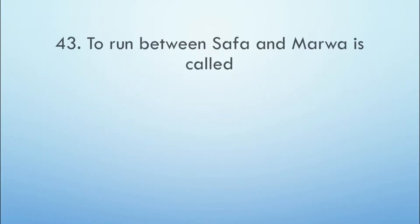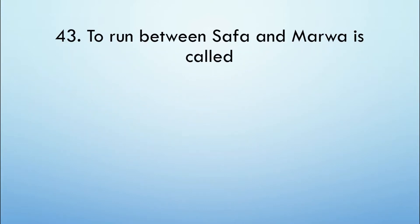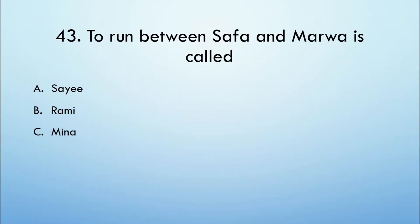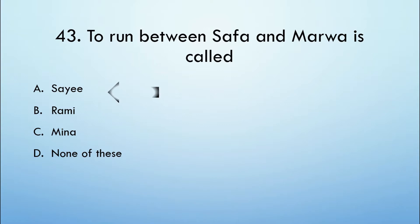To run between Safa and Marwa is called: Option A: Sa'ee. Option B: Rami. Option C: Mina. Option D: None of these. And the correct option is Option A, Sa'ee.